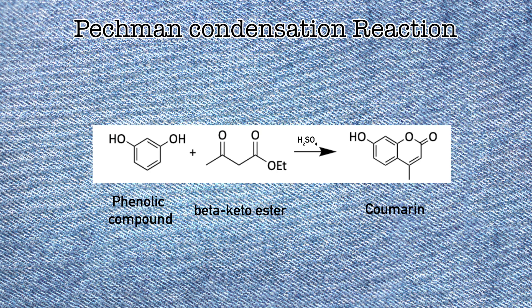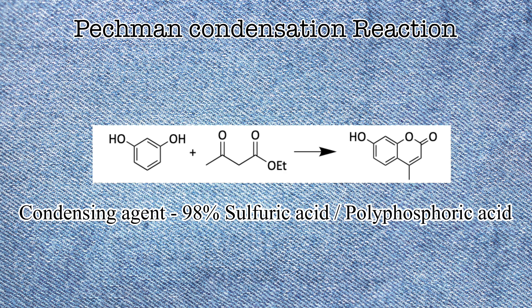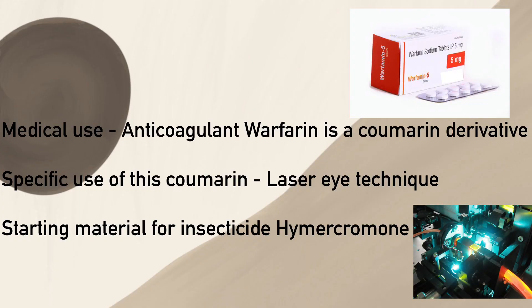Concentrated sulfuric acid is usually used as the condensing agent, whereas some also use polyphosphoric acid. 7-Hydroxy-4-Methyl-Coumarin is used commercially as a laser dye. It is also used as a starting material for the production of certain insecticides. Warfarin, the anticoagulant, is a coumarin derivative.